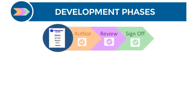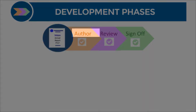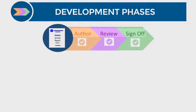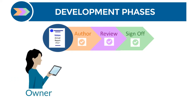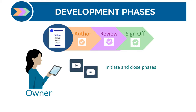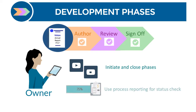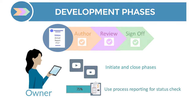Now let's explore the benefits of the author, review, and sign-off phases. Although all three are typically used to develop report packages, you can select the phases best suited for your reports. Report package owners initiate and close each phase, and can use process reporting to identify the remaining tasks and overall status.